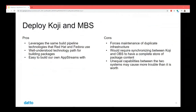The Koji option leverages the same build pipeline technologies that Red Hat and Fedora use — it's well understood for building packages and easy to build our own application streams with. However, it forces us to maintain duplicate infrastructure. We already maintain an OBS instance, so adding Koji-based infrastructure would essentially double the burden and require synchronizing between Koji and OBS, adding more storage requirements. There are also unequal capabilities between the two systems that may cause more trouble than it's worth.